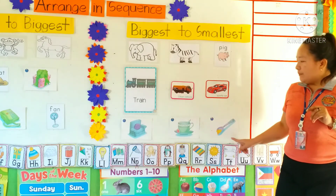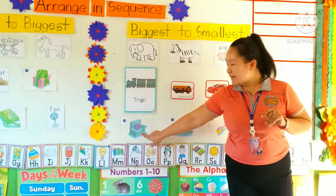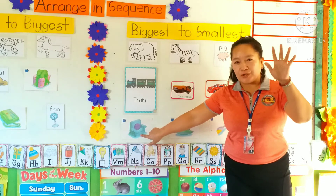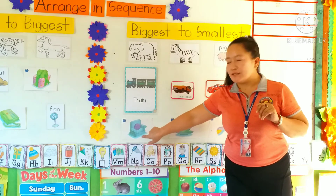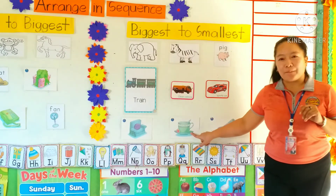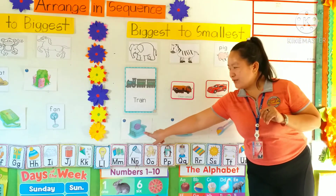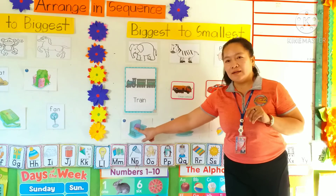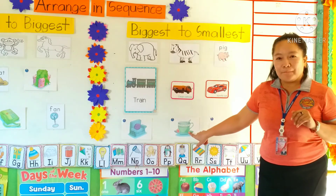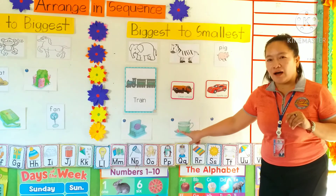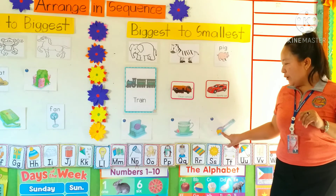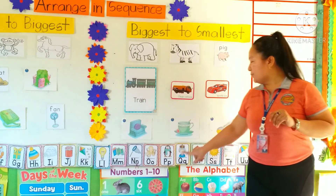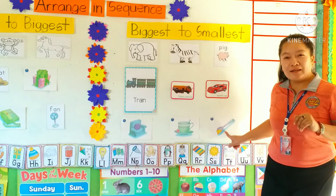Now let's look at the next set of pictures. This is a sofa — you have a sofa in your home, right? The next picture is a cup, and the next picture is a spoon. Sofa is bigger than cup, and cup is bigger than the spoon. So the biggest is sofa and the smallest is spoon.